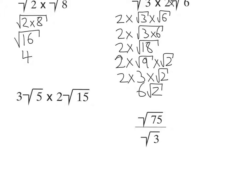So first I'm going to do is put the whole numbers on one side. That's 3 times 2. And then the root 5 times root 15. Combine the whole numbers together. So 3 times 2 is 6.